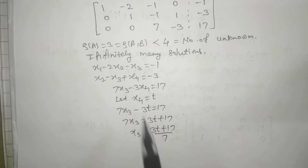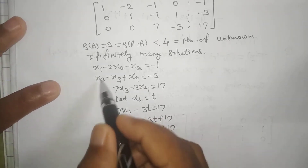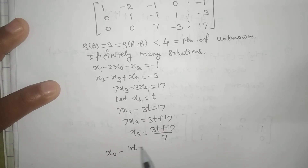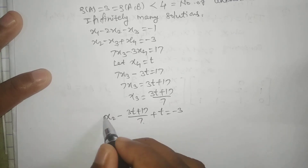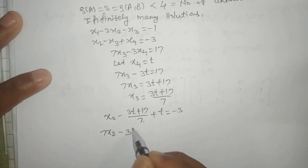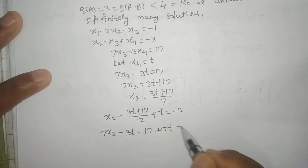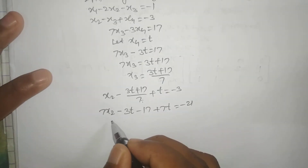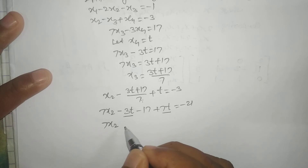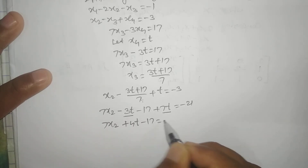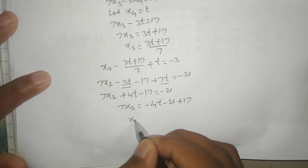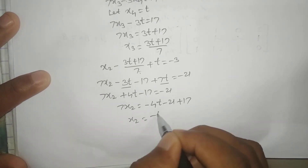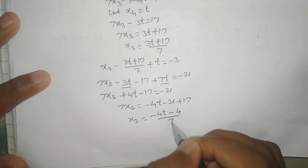Now substitute x3 and x4 into equation 2: x2 minus (3t plus 17)/7 plus t equals -3. Multiplying through by 7: 7x2 minus 3t minus 17 plus 7t equals -21, giving 7x2 plus 4t minus 17 equals -21, so 7x2 equals -4 minus 4t, therefore x2 equals (-4t minus 4) upon 7.